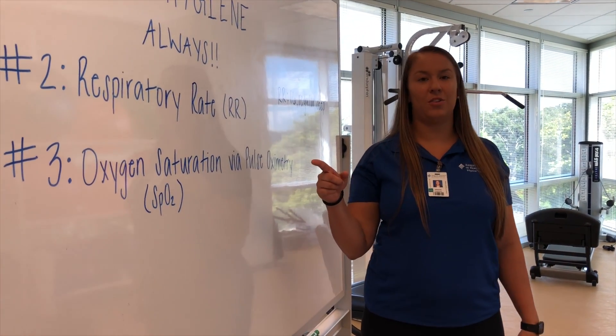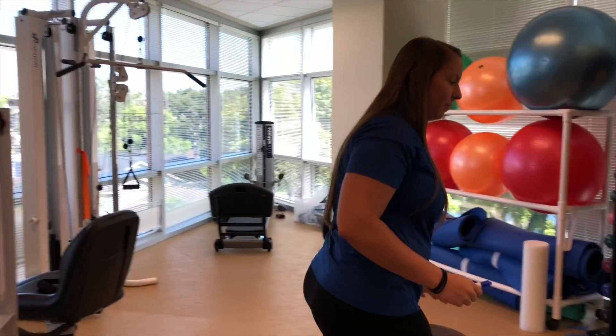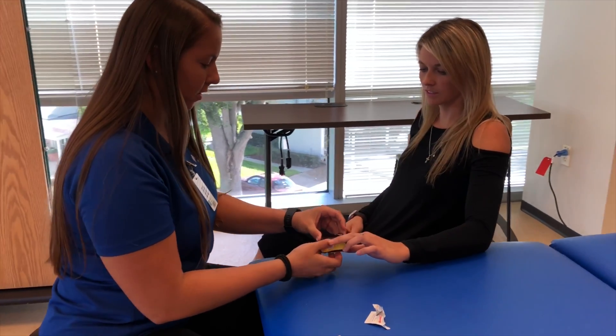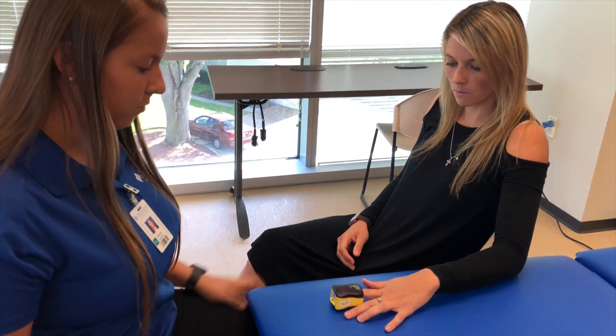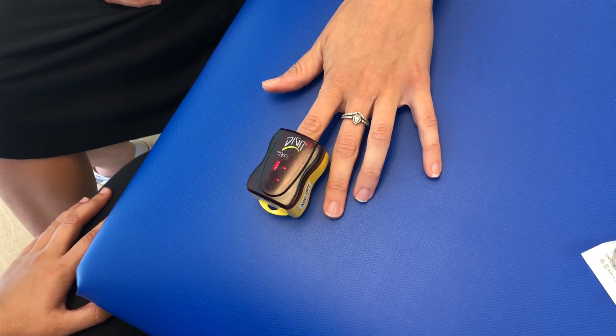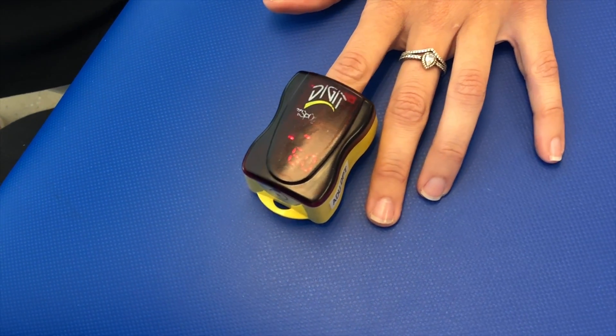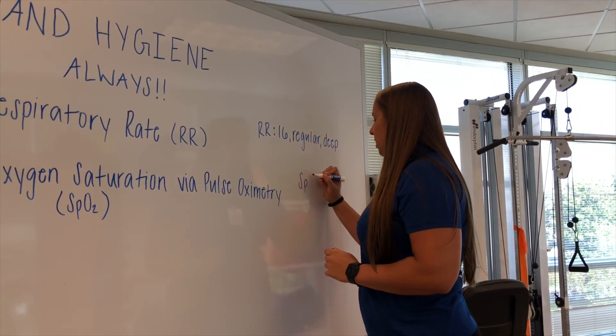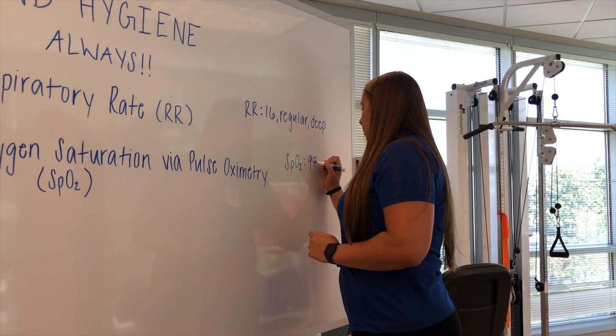Next we're going to do oxygen saturation via pulse oximetry. Going back to the patient — hi Courtney. So we're going to clean our device first. Courtney, I'm going to have you stick your finger all the way inside until you feel the very back, then have your hand flat on the table. Let's place that finger right there — feel the back? Alright, flat hand. I'm going to press the on button and we're going to wait for our reading. You can go ahead and take that finger off. SpO2: 98%.